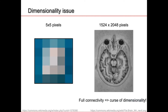With the dimensionality issue, consider two images: one with 25 pixels and another with three million pixels. The problem comes with full connectivity of neurons — each neuron in a layer is connected to all neurons in the previous layer. This is known as the curse of dimensionality. The first issue is the sparsity of data: when dimensionality increases, the volume of space increases so fast that the available data becomes very sparse.